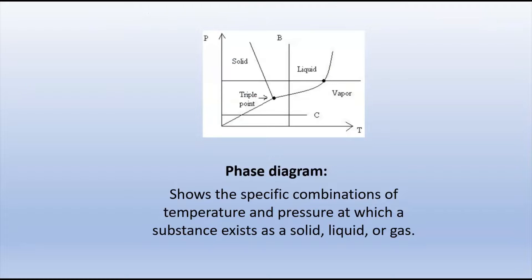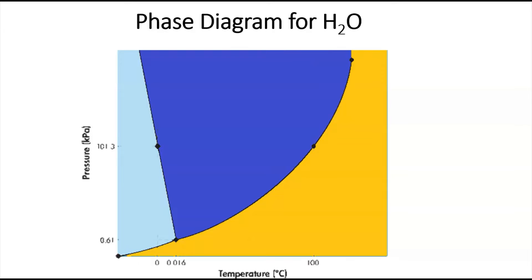The first one, the phase diagram, shows the specific combinations of temperature and pressure in which a substance exists as a solid, a liquid, or a gas. It's not as widely recognized that changes in pressure will also cause differences in whether or not something freezes, boils, or whatever, just as much as changes in temperature. So here is a phase diagram for water, this being the most commonly used example.